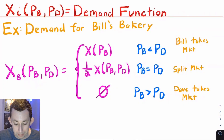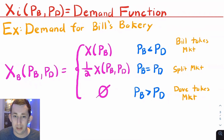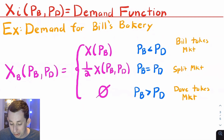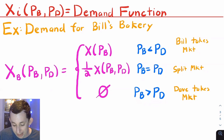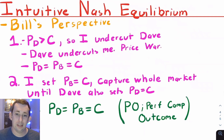Let's talk more about x sub i — the demand function, or the number of pastries Bill and Dave sell. From Bill's perspective, x sub b of p sub b and p sub d is a piecewise function. If Bill is charging a lower price than Dave, consumers will go entirely to Bill's store and Bill captures the whole market. If Bill and Dave charge the same price, each takes half the market. If Bill is charging a higher price than Dave, everyone goes to Dave, and Bill's sales are zero.